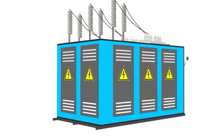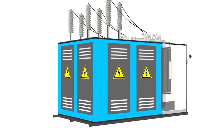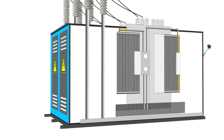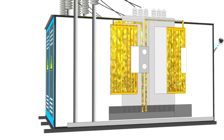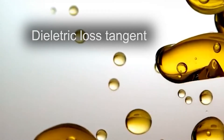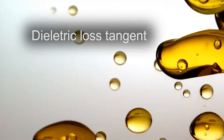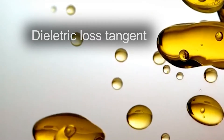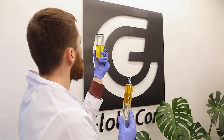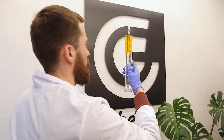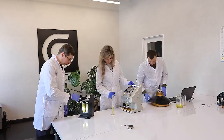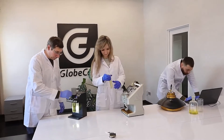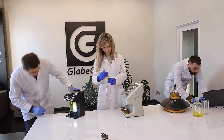To obtain complete information about the dielectric properties of transformer oil, the dielectric loss tangent is measured. In the case of new oils, this parameter makes it possible to assess the quality and degree of their purification, and in the case of used oils, the degree of their contamination and aging is estimated.